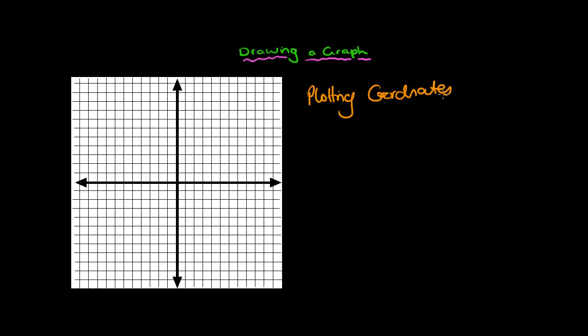Now obviously if we want to draw a graph, the very first thing that we need is axis. Hopefully you remember that the axis that goes from left to right, or the horizontal axis we sometimes call it, is called the X axis. The vertical axis is also called the Y axis, Y to the sky.